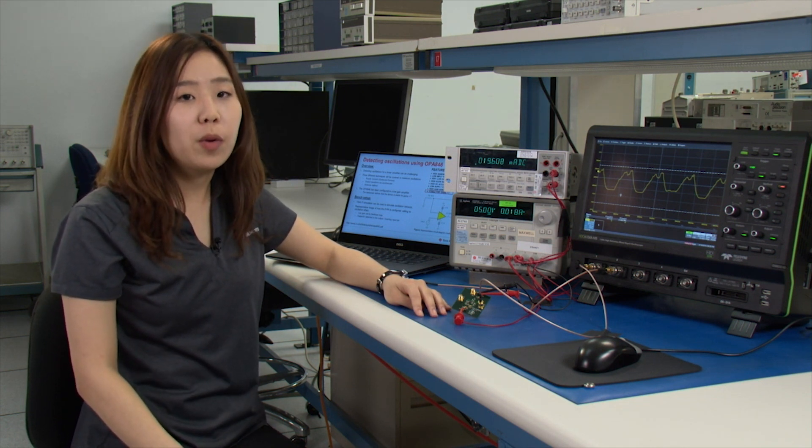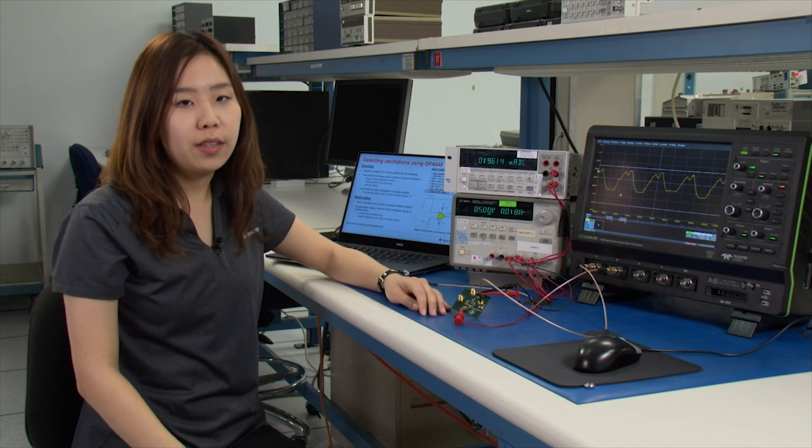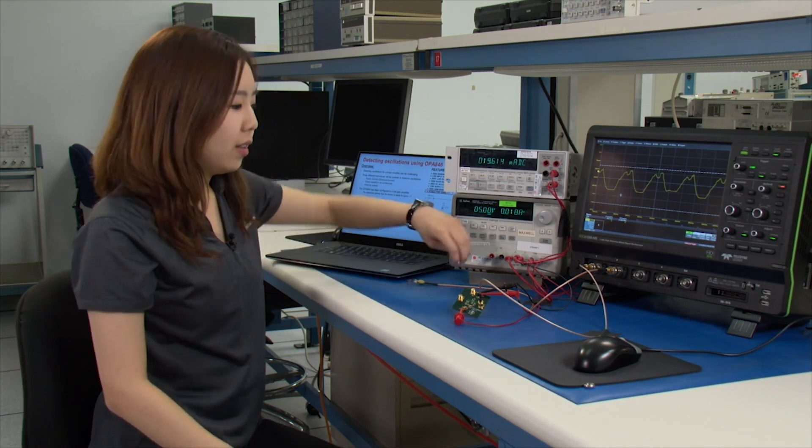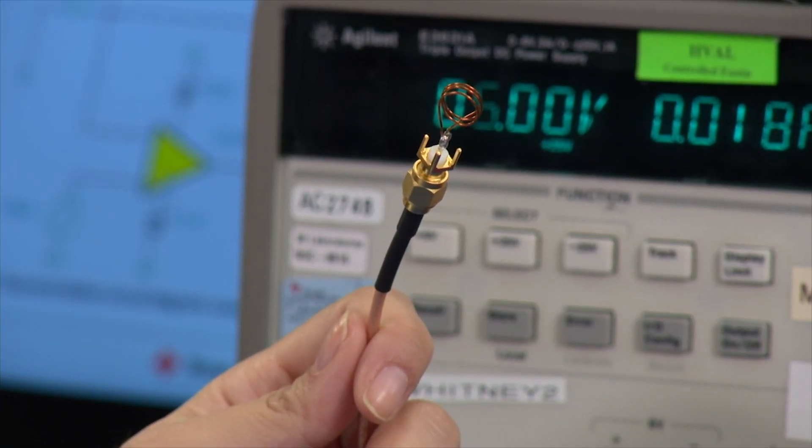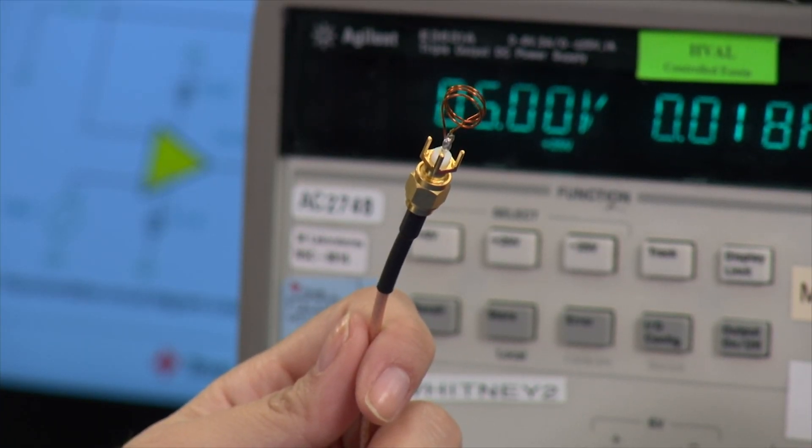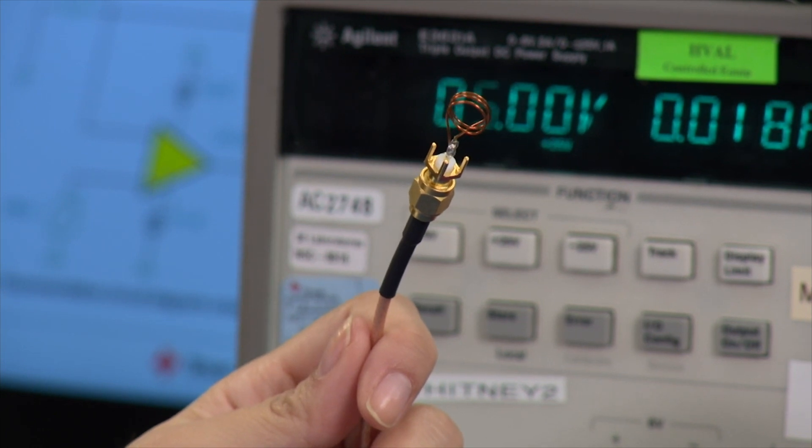Now if you are unable to access the output signal from your board, you can use an alternative method using a loop antenna. This loop antenna that we are using today is created by using an insulated wire wrapped into a coil and soldered onto an SMA connector, which is then connected to our oscilloscope.